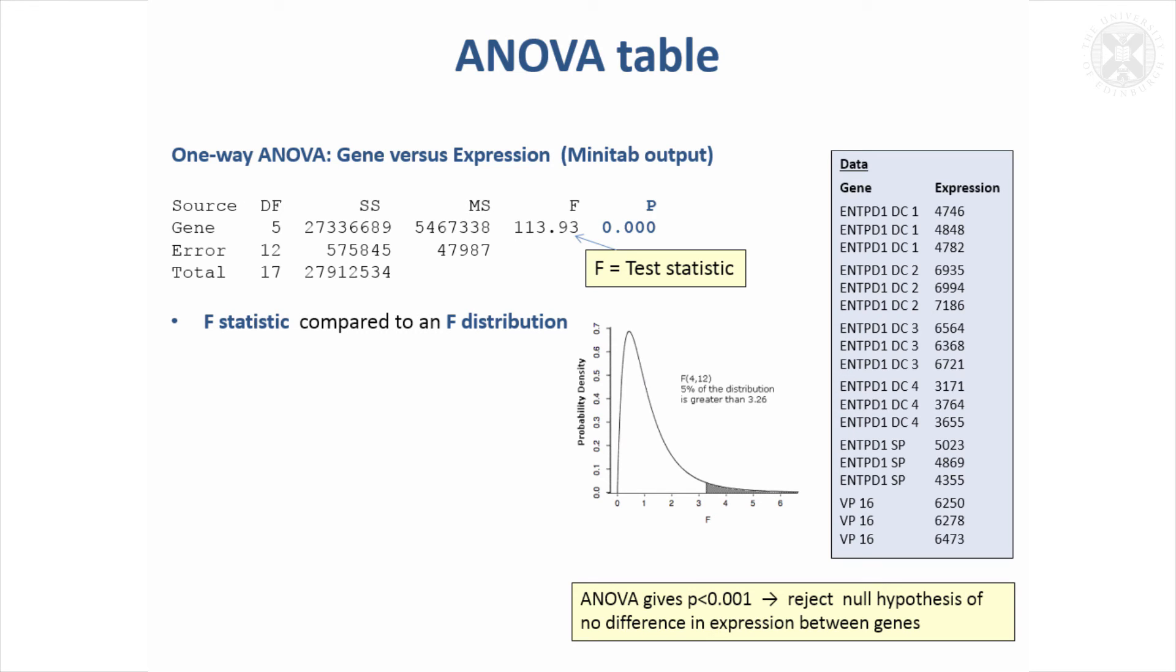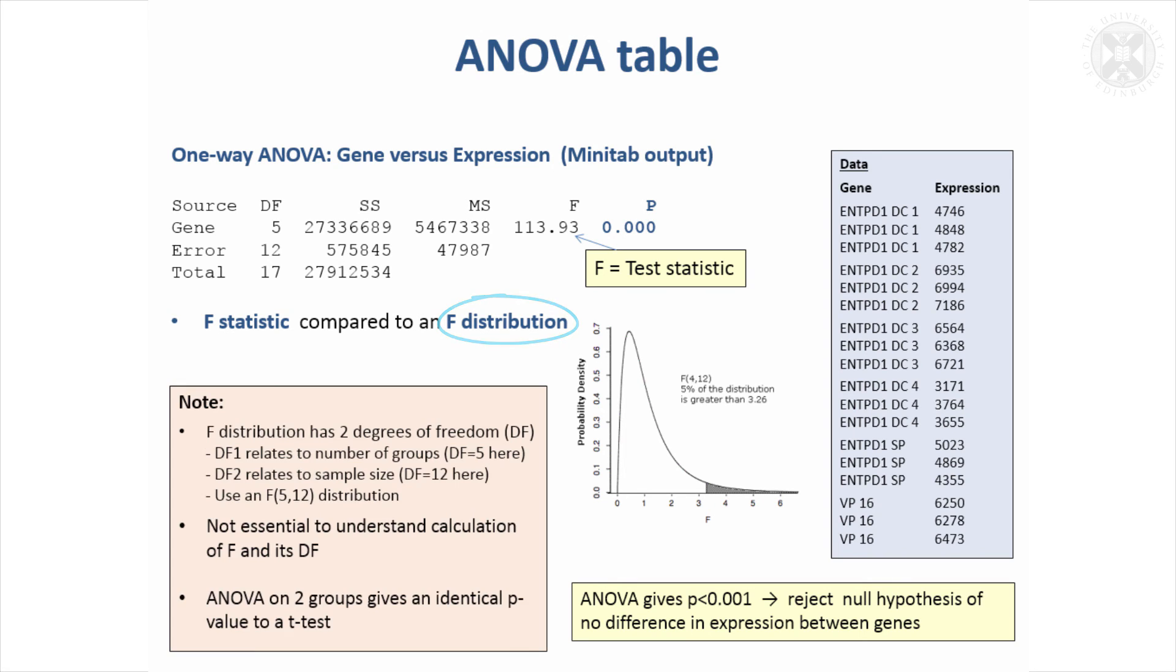Of course we had a very small p-value here, so that says the genes are highly significantly different in terms of the expression levels they're producing. I talked a bit about the distribution you'd compare the null hypothesis to to get the p-value, but I'll not go over that again just now.